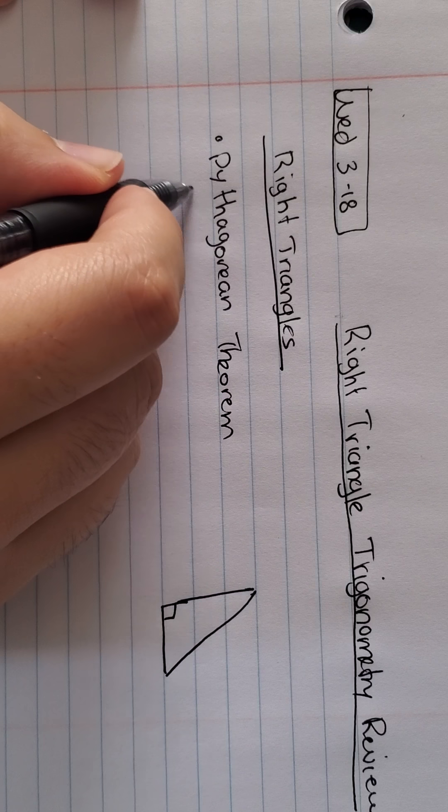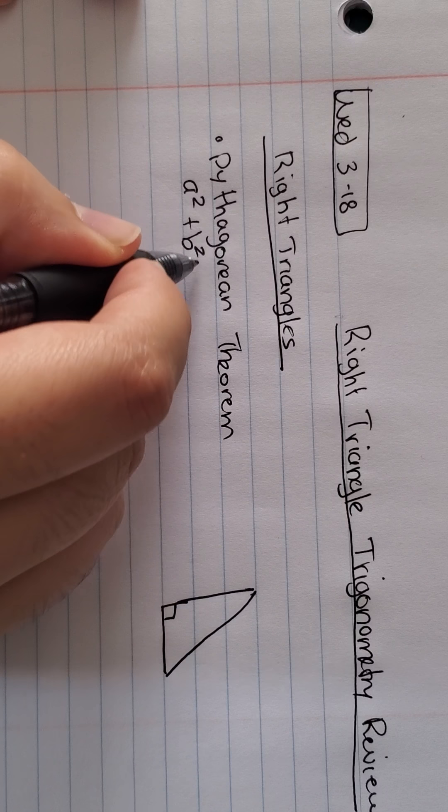So remember that for right triangle trigonometry, we actually have three different tools. So let me write them down. Right triangles. So keep in mind that I have the one and only Pythagorean theorem. This is for right triangles only. So something like this right here. Pythagorean theorem says a squared plus b squared equals c squared.